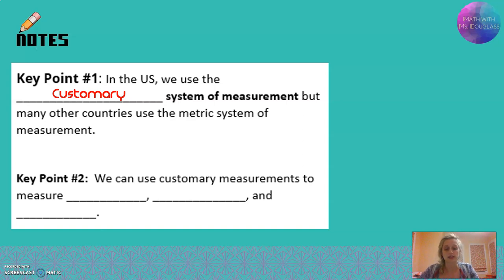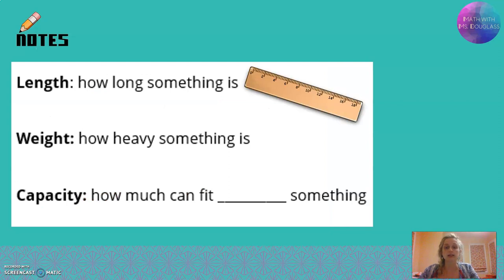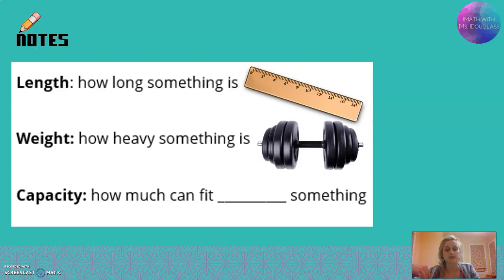So we use the customary system to measure three types of things: length, weight, and something called capacity. Length is how long something is. We can measure it in inches, in feet, in yards, in miles. Weight is how heavy something is. Is it an ounce? Is it a pound? Is it a ton?